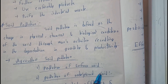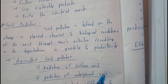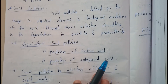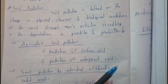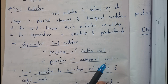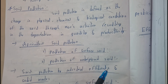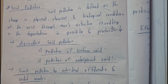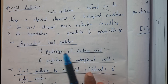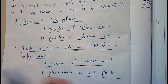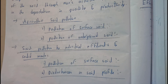Let's check out the types of soil pollution. It is basically divided into two types: mainly agricultural soil pollution, and soil pollution due to industrial/effective wastes.